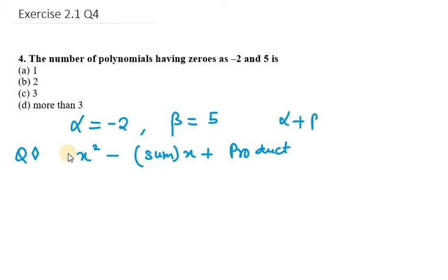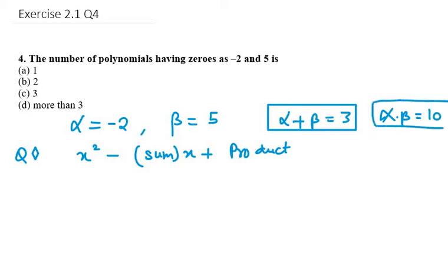In this case the sum will be alpha + beta. Alpha + beta is -2 + 5, that will be 3. Then we have alpha · beta. Alpha · beta equals -2 into 5, so it will be -10.